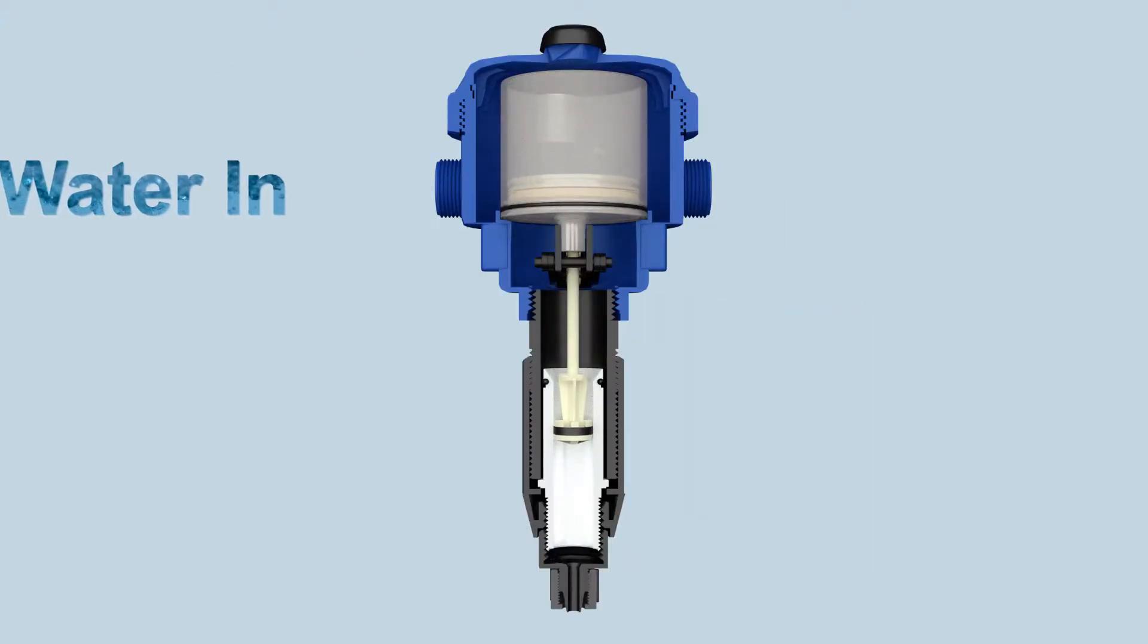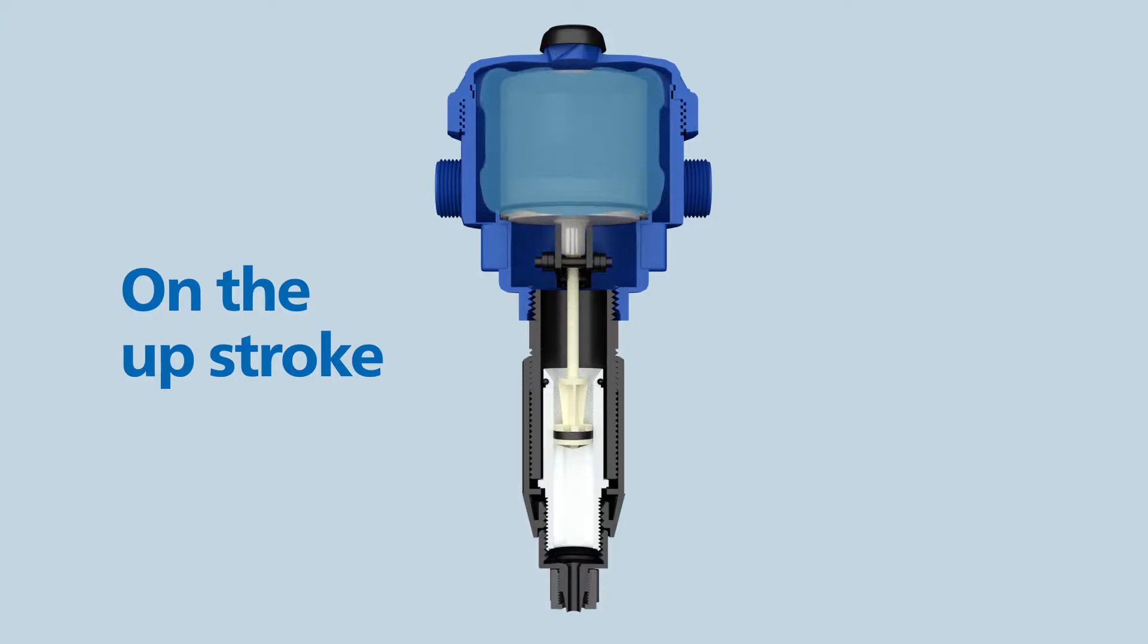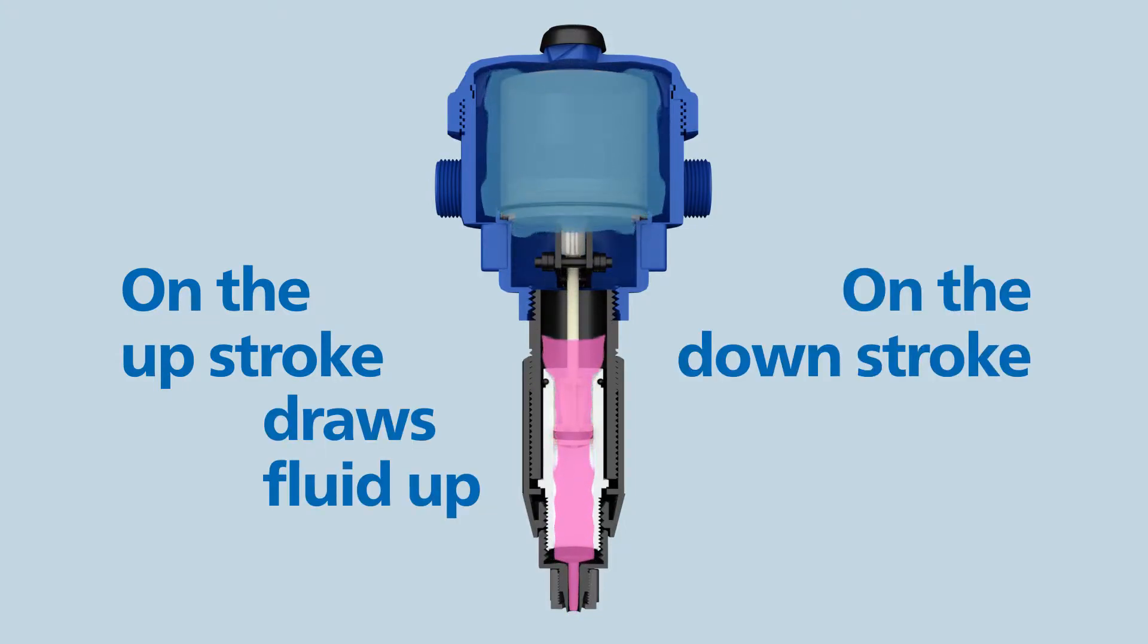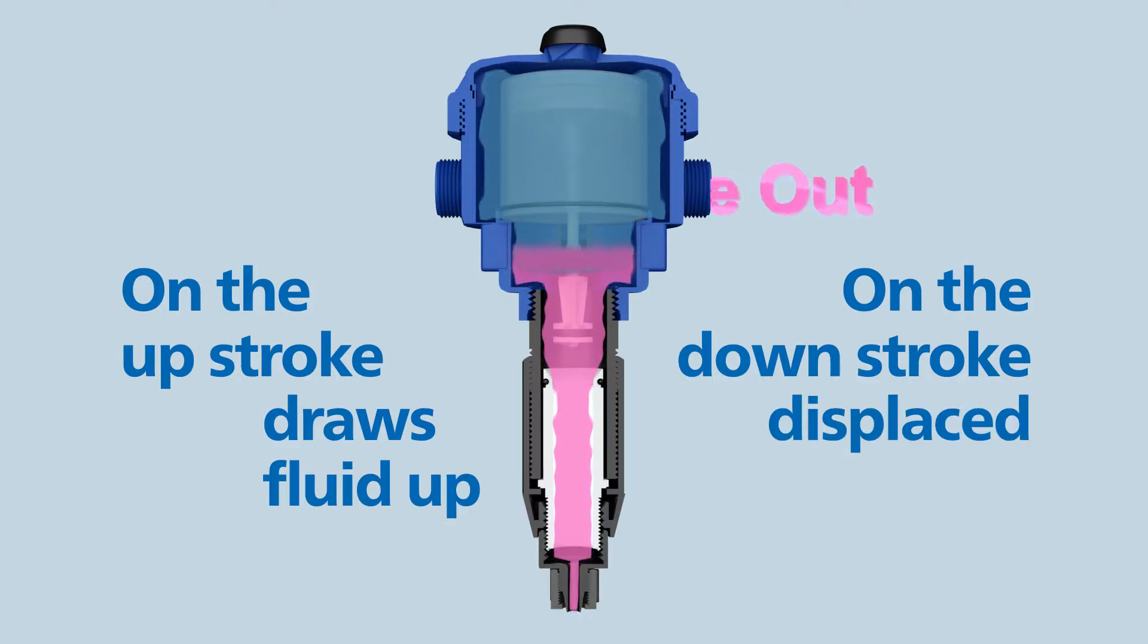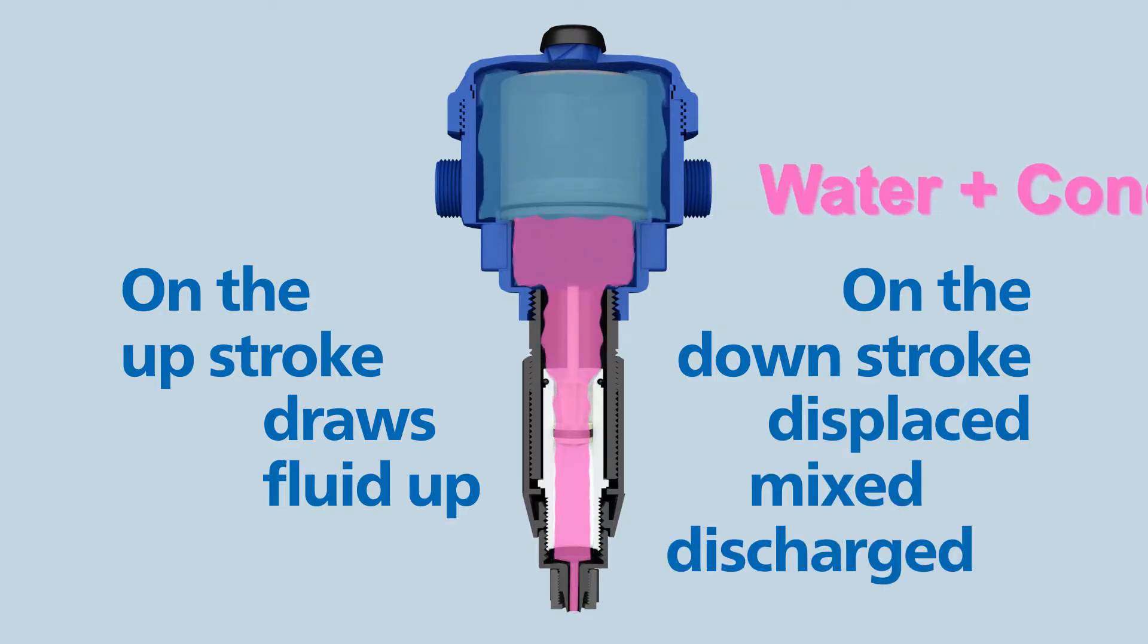The hydraulic motor moves up and down when water enters the Dosatron unit. On the upstroke, the Dosatron draws fluid up from the concentrate tank. On the downstroke, the concentrate is displaced into the chamber, then mixed and discharged into the water line.